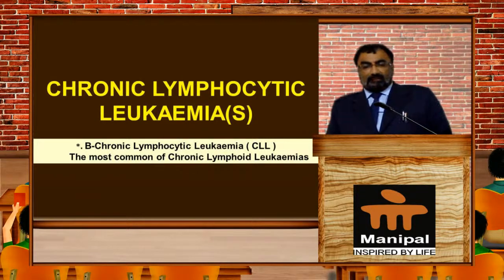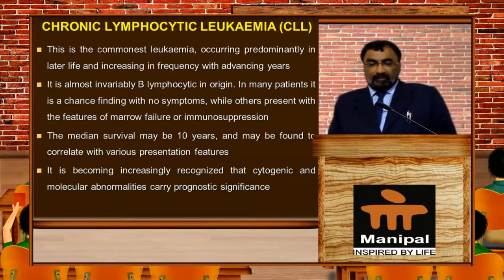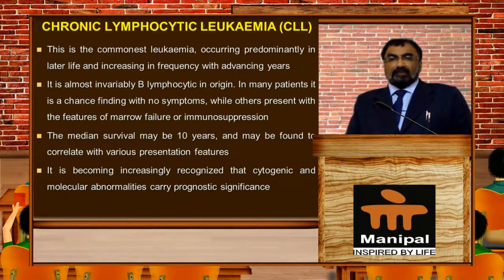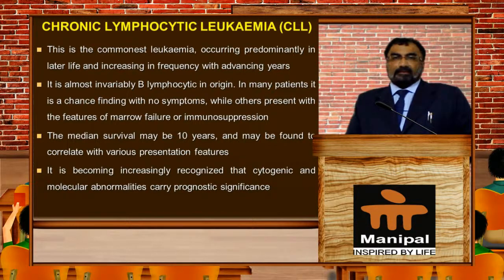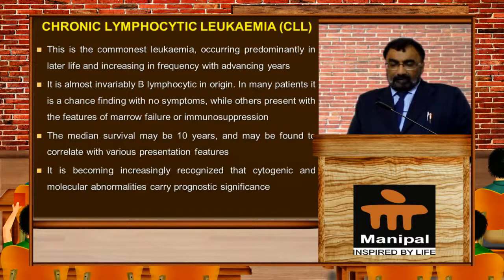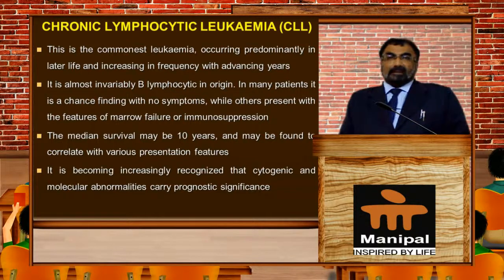Now let us come to chronic lymphocytic leukemia, the last component of this discussion. CLL is the commonest of the leukemias, occurring predominantly in later life with increasing frequency with advancing years. In many patients it is a chance finding with no symptoms, while others present with features of marrow failure or immunosuppression. The median survival may be over 10 years.